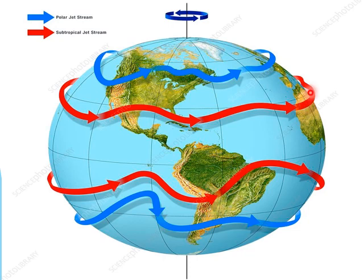Subtropical jet streams divide into two parts: easterly and westerly jet streams. In other countries, easterly jet streams cause tropical cyclones. In India, easterly jet streams cause tropical cyclones, whereas westerly jet streams cause temperate cyclones.